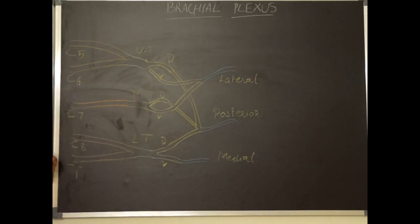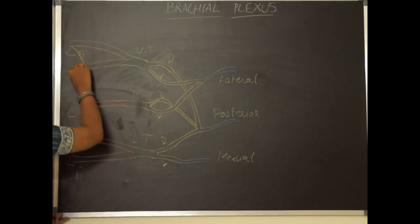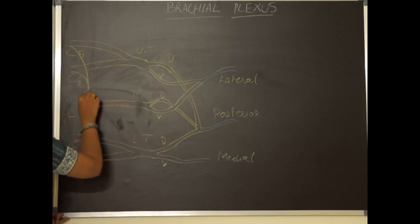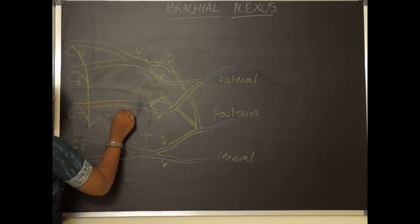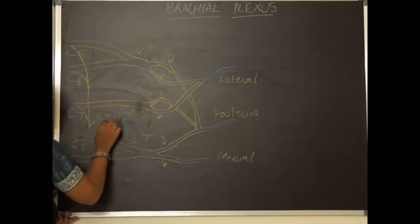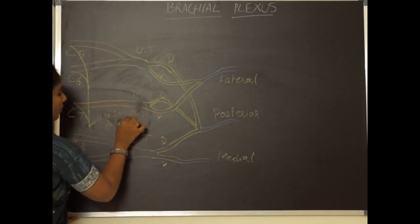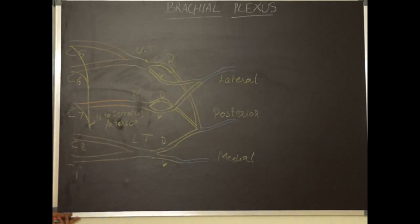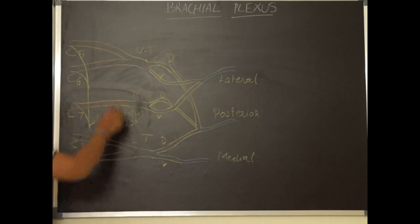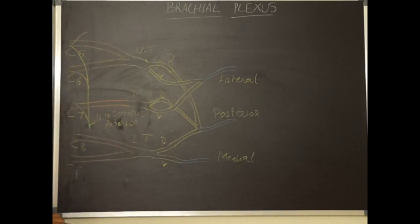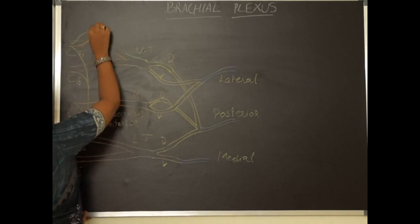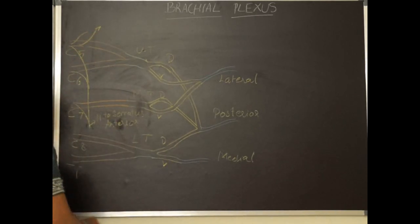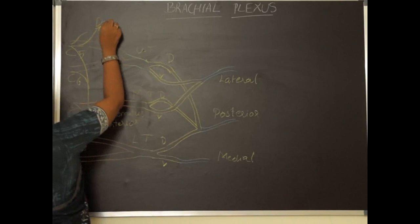Let's look at the branches from the roots. The C5, C6, and C7 roots all give branches that join to form a nerve called the nerve to serratus anterior, also called the long thoracic nerve or nerve of Bell. This is the only nerve supplying the serratus anterior muscle. C5 sometimes contributes to the formation of the phrenic nerve, which supplies the diaphragm. C5 also gives a nerve supplying rhomboids major, minor, and levator scapulae, called the dorsal scapular nerve.